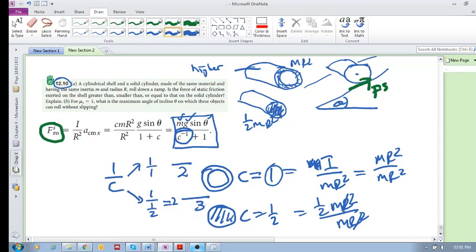So for the solid guy, we have 3 in the denominator. For the cylindrical shell, we have 2 in the denominator. So what does that mean? It means that the frictional force for the solid cylinder is lower because you are dividing by 3, than the frictional force needed for the cylindrical shell. So there's a higher frictional force is required for the cylindrical shell than for the solid cylinder.